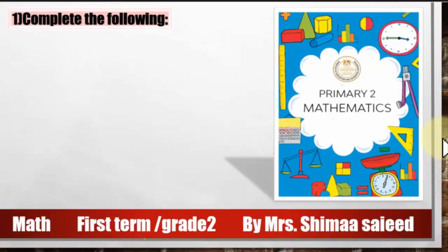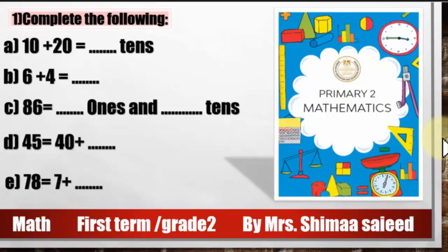Complete the following: 10 plus 20 equals 30. How many tens are in 30? 3 tens. If the question gives a blank with the word 'tens,' write '3 tens' to confirm you understand that 3 tens equal 30.